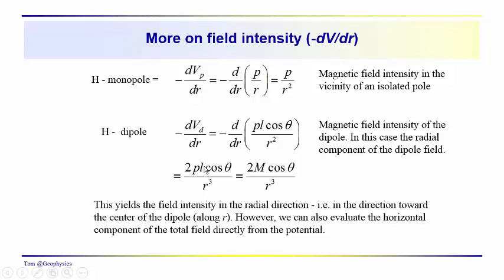We can simplify that: PL cosine theta is two times the dipole moment times the cosine of theta. These are the field intensities for the monopole and dipole as a comparison, and remember, these are in the radial direction.